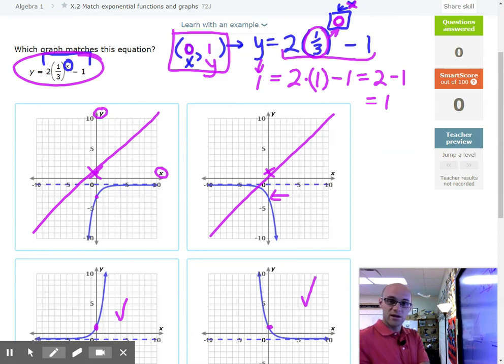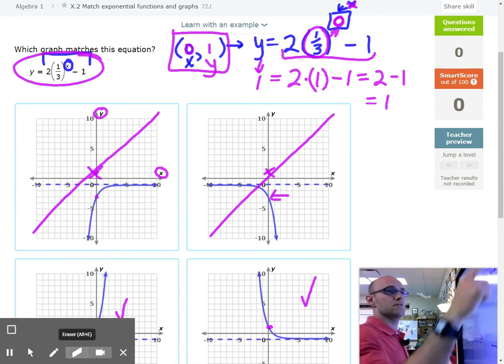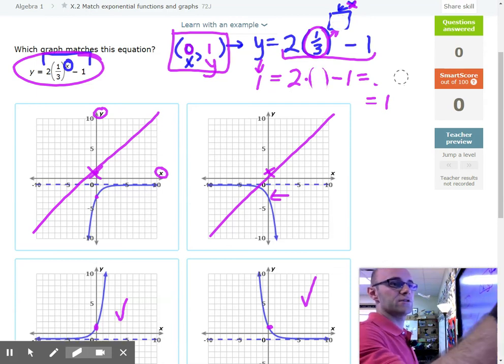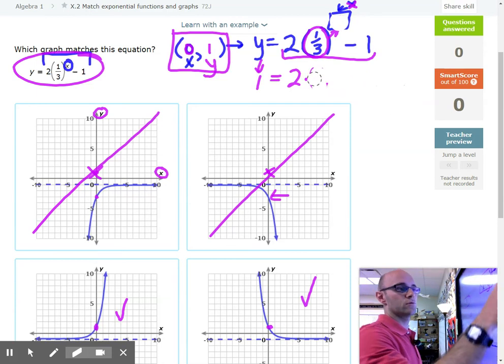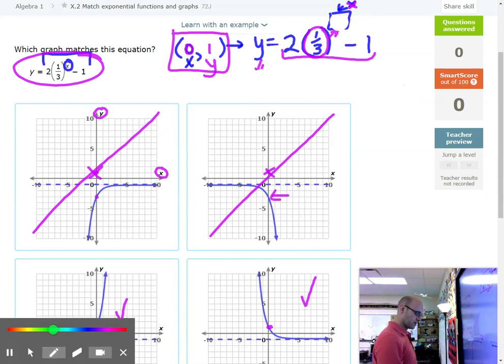So now, if we don't know any of the patterns of exponential functions, we probably should just go ahead and plug in one more point. So let's plug in one more point. I'm going to go ahead and erase the zero. Erase our work here just a little bit, and we'll reuse some of this spot to figure out our next point. So let's say we plug in now. Let's just go over one more. Let's plug in a 1. Okay.